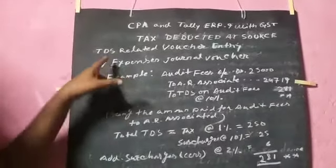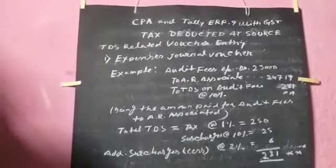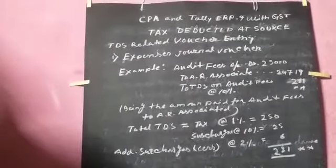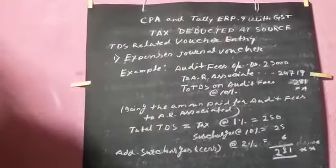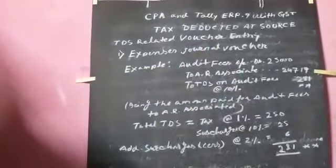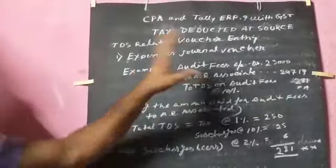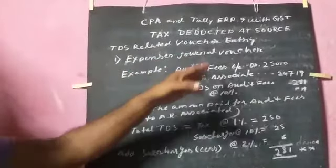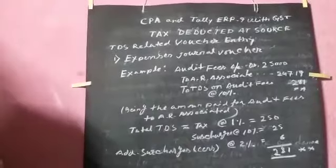Today we have TDS-related voucher entry. TDS-related voucher entry is the voucher entry. That is TDS expenses journal vouchers and TDS payment vouchers. So we have TDS expenses journal vouchers step by step out.